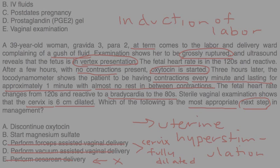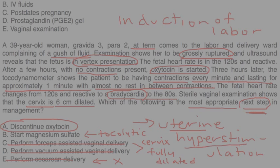That leaves choices A and B, and both seem appropriate. Discontinuing oxytocin seems perfectly appropriate since it is the medication that caused the uterine hyperstimulation and fetal bradycardia. Starting magnesium sulfate also seems appropriate because magnesium sulfate is a tocolytic. However, the correct next step is choice A — discontinue the oxytocin. If that still doesn't stop the uterine hyperstimulation, then you would give a tocolytic, which would be choice B.